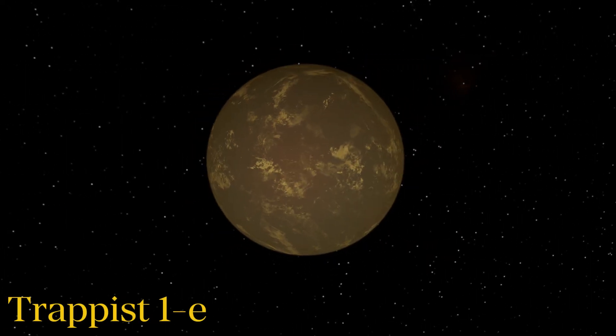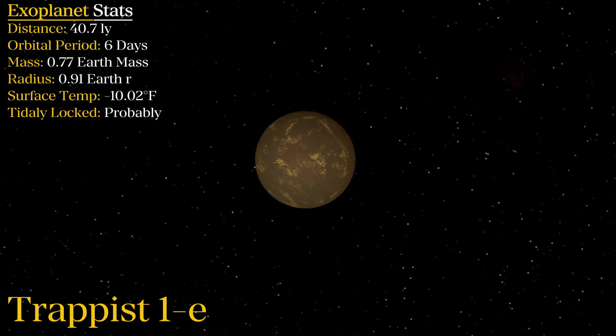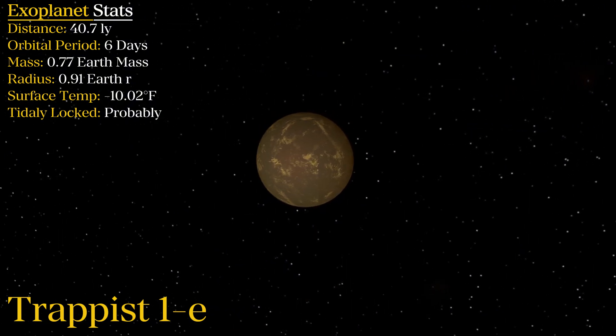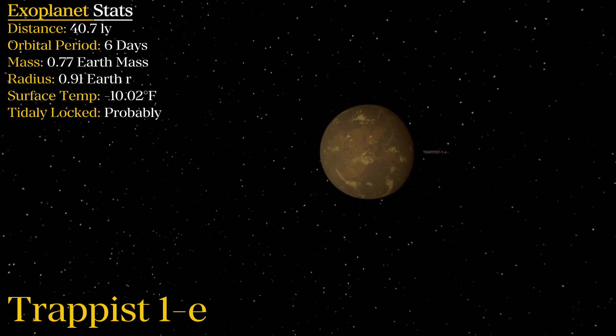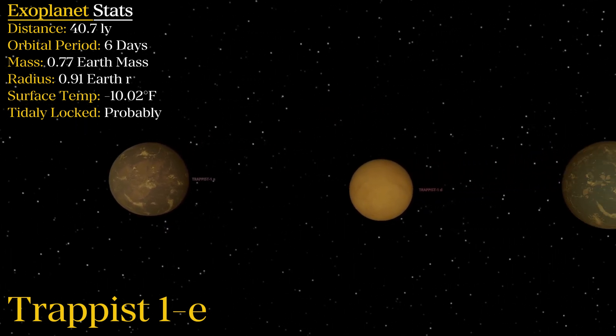TRAPPIST-1e. You may have seen this coming if you know about exoplanets, but it seems although this planet is one of the most likely to be habitable. Even if this world specifically isn't conducive to human life, there are three other worlds in the same system that all exist within the habitable zone of their parent star.